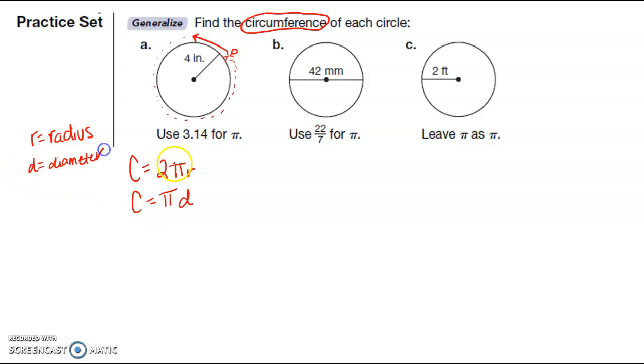You can choose which one you use based on what you're given. So in a we're given a radius, but in b we're given a diameter. You'll also find, at least in Saxon math, that they will tell you what they want you to use for pi. So in a we're going to use 3.14 for pi, but in b we're going to use 22 over 7, and then the most confusing one seems to be when we leave pi just as a symbol. So let's go ahead and get into this.